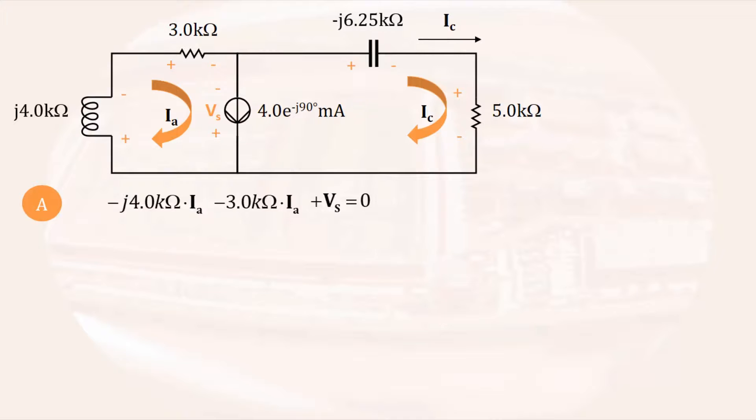Starting in the lower left-hand corner of loop C, we have a voltage decrease equal to Vs. This is followed by a voltage decrease across the capacitor which will be equal to minus a negative j 6.25 kilo ohms times Ic, followed by a voltage drop of 5 kilo ohms times Ic.